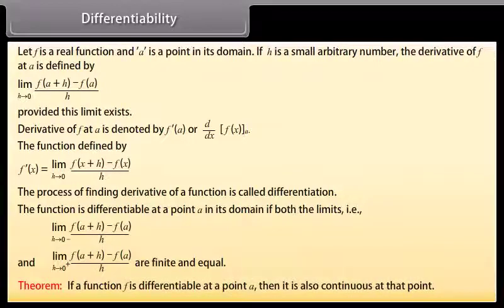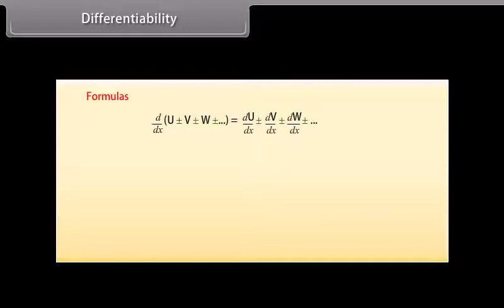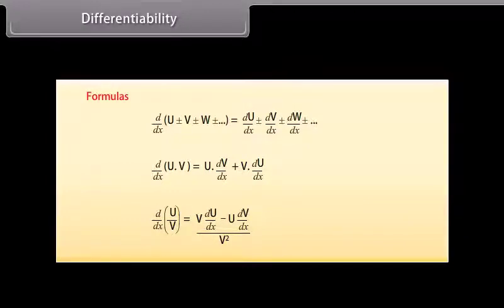Theorem: If a function f is differentiable at a point a, then it is also continuous at that point. Differentiability formulas: d/dx of (u ± v ± w ± …) = d/dx(u) ± d/dx(v) ± d/dx(w) ± …; d/dx(u · v) = u · d/dx(v) + v · d/dx(u); d/dx(u/v) = [v · d/dx(u) − u · d/dx(v)] / v².